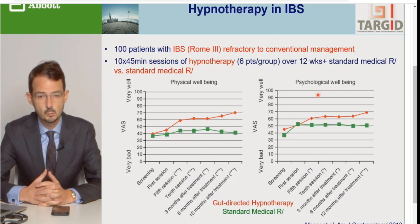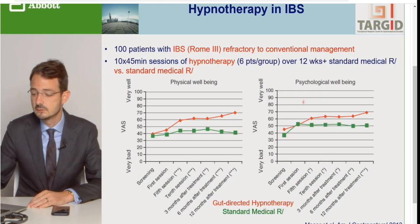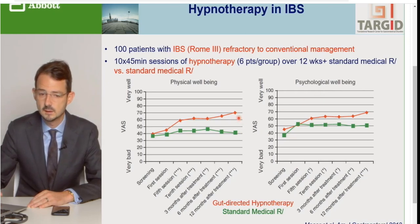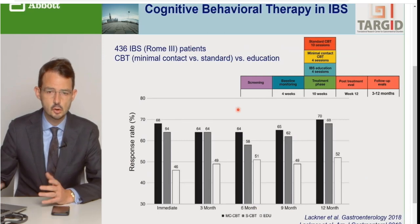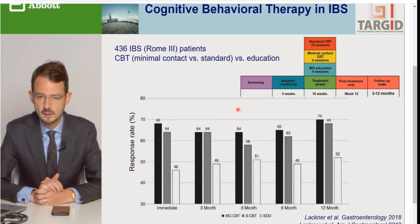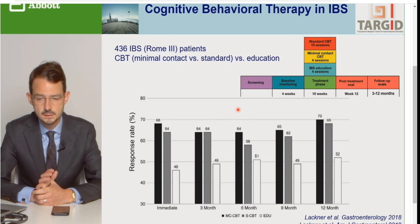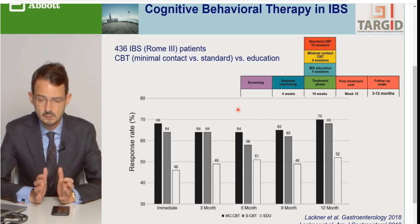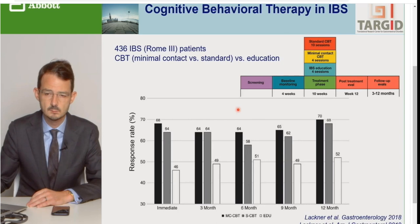Một số các điều trị thay thế khác để giải quyết các triệu chứng trung ương, cơ chế trung ương thí dụ như thôi miên hoặc là các liệu pháp chỉnh sửa hành vi nhận thức. Số bệnh nhân cần được điều trị để có hiệu quả là rất nhỏ từ 3 đến 4 người, đây là điều trị hiệu quả. Tuy nhiên không phải quốc gia nào cũng có những người làm thôi miên chuyên nghiệp và nhiều khi bảo hiểm y tế không chi trả. Đây là một nghiên cứu sử dụng thôi miên - 10 phiên mỗi phiên dài 45 phút trong khoảng 3-4 tháng. Một số các triệu chứng về mặt thực thể và tâm lý thậm chí tại thời điểm 1 năm sau khi đã kết thúc là những người được thôi miên tập trung vào triệu chứng ở đường ruột là có lợi hơn so với nhóm chứng. Những liệu pháp chỉnh sửa hành vi cũng có hiệu quả so sánh với việc giáo dục IBS đơn thuần, và kết quả cũng bền vững một năm sau khi kết thúc điều trị.